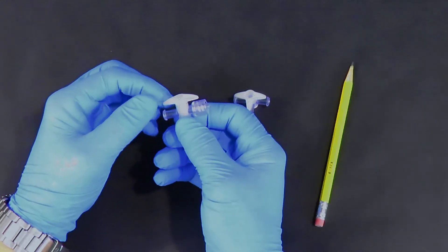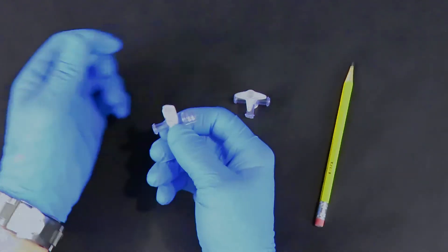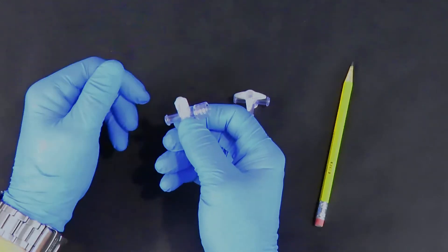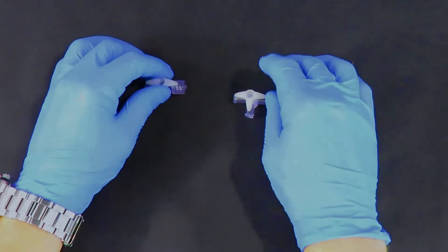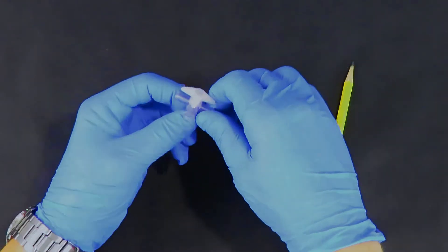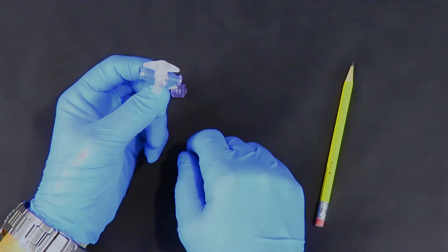In the case of a one-way stopcock, it can be used to open or close and shut off the flow of liquid or gas. And in the case of four-way stopcocks, it can be used to control the direction of flow.